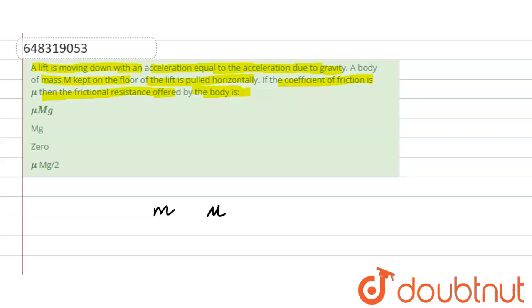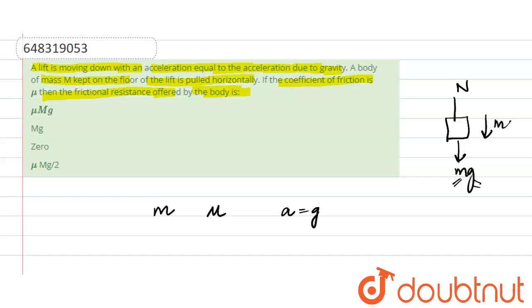The lift is moving down with an acceleration equal to acceleration due to gravity. In this case, if the lift is moving downward, there will be a normal force acting upward and mg acting downward, where m is the mass and g is the acceleration due to gravity. The net downward force on the body is ma, which equals mg, since a equals g.